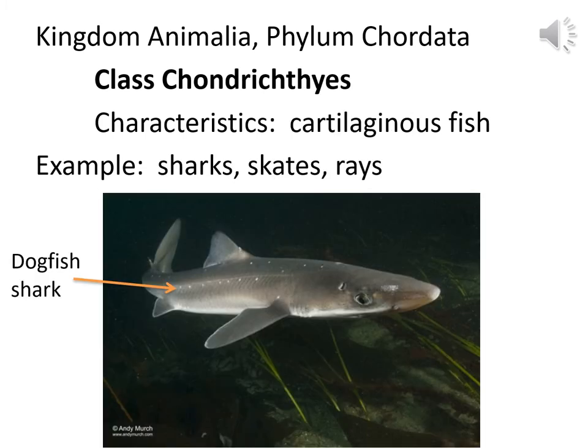A dogfish shark would be in Class Chondrichthyes. 'Chondry' refers to cartilage and 'ichthyes' refers to fish. These guys don't actually have bones like we do — their skeleton is made out of cartilage rather than calcium. They do however have jaws that bite. The dogfish shark is in Class Chondrichthyes with cartilaginous fish.